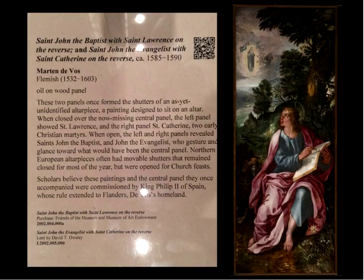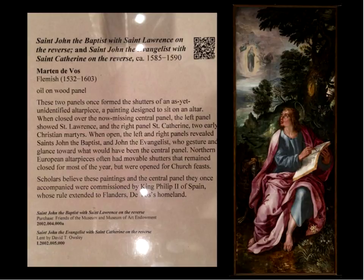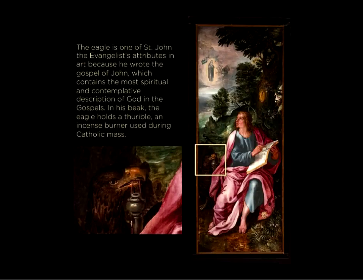I want to show you an example of the card next to those four beautiful panels. As you can see from the description, you're told the center panel is missing from the collection, how the panels were displayed and used in the church, the subject matter, and who commissioned the work. But nothing is really written about the painting itself. So for the next two slides, we're going to focus on the panel of St. John the Evangelist, and cover some details that can be found in the painting that may have been overlooked by the visitor.